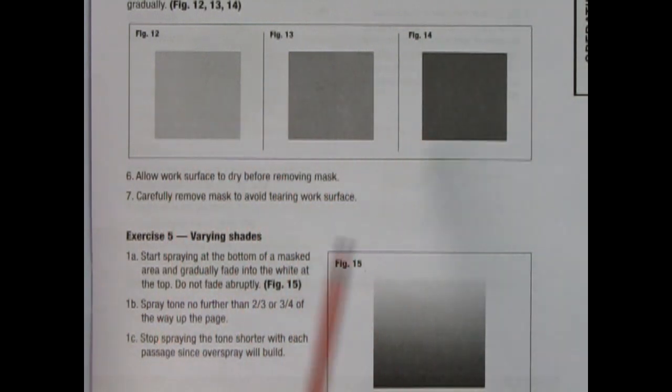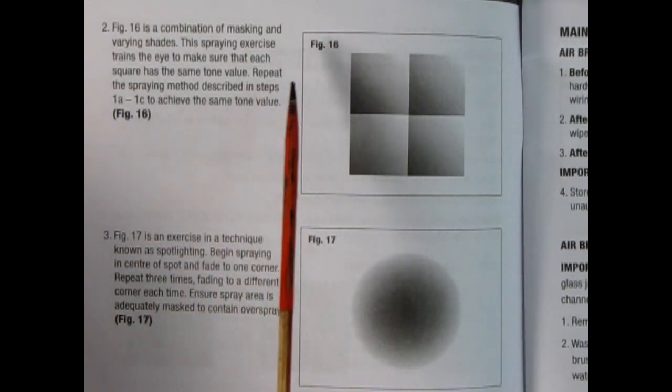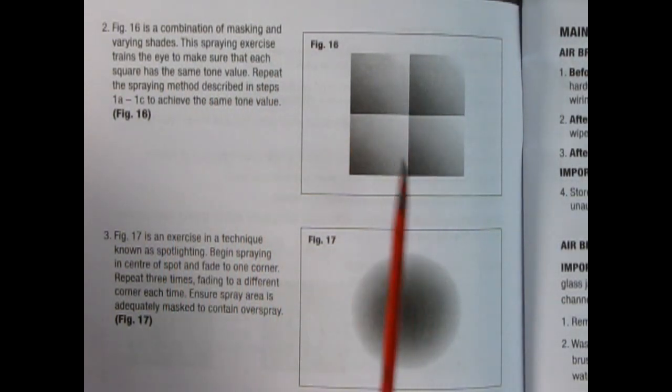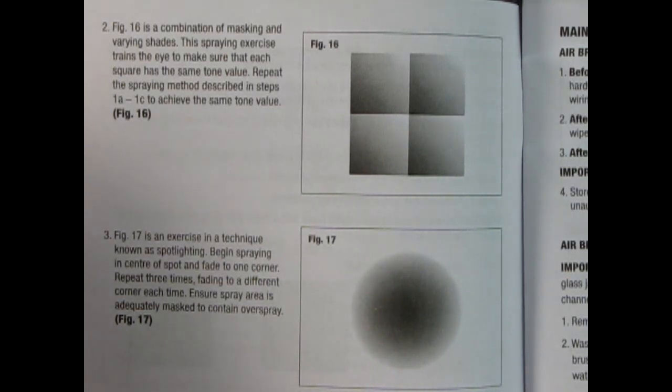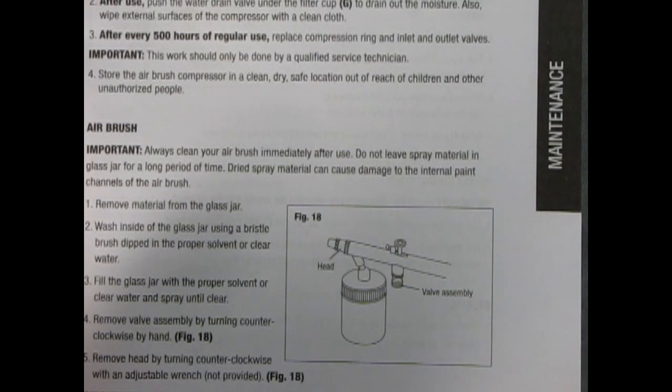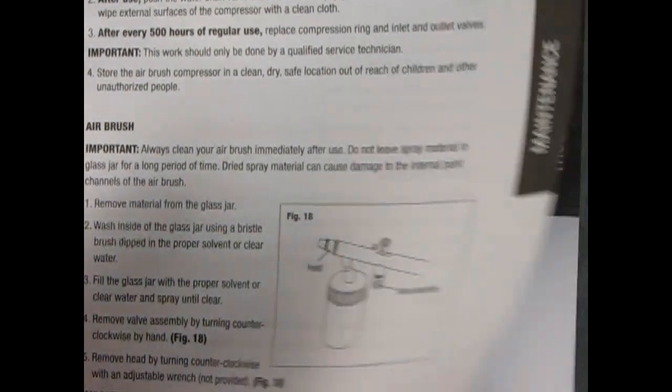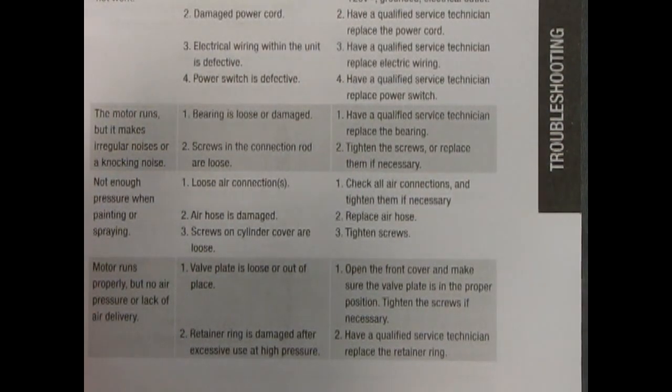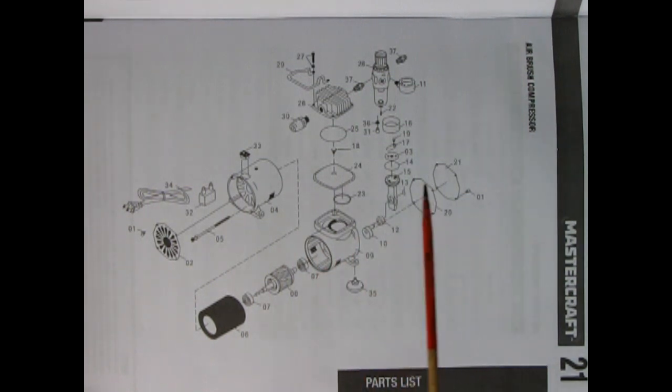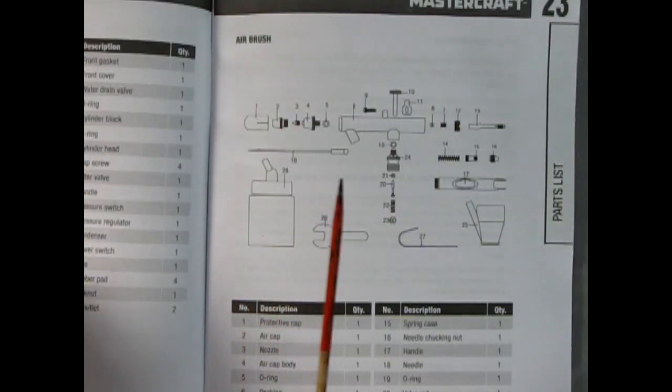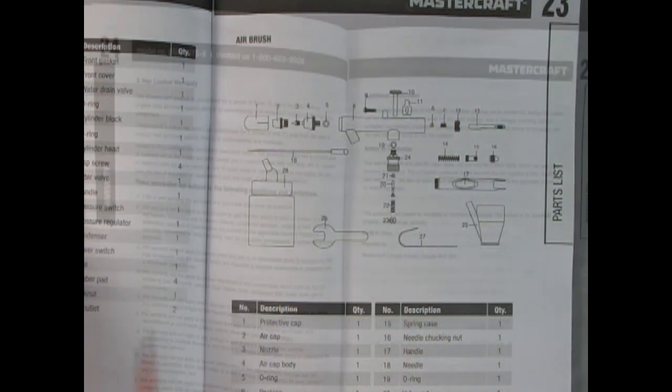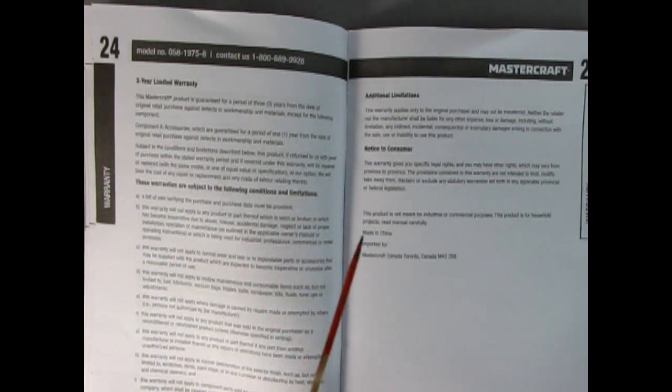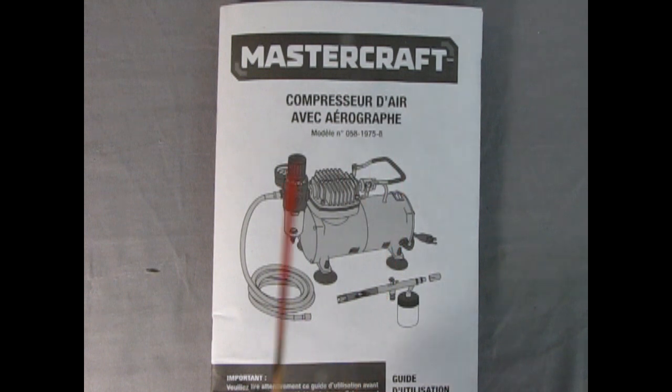Exercise four is about even tones showing different figure images for tones and varying shades. Figure 16 is a combination of masking and various shades. There's also a spotlighting exercise. A really cool instruction book on how to use your airbrush. Also included is maintenance information and a troubleshooting guide. On page 21 we get a parts list with exploded views of the air compressor and airbrush, followed by the three-year warranty contract. Since Mastercraft is Canadian-made by Canadian Tire, we also have instructions in French.